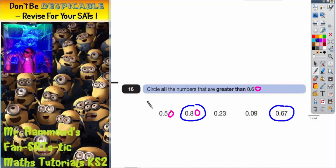You could actually think of it in terms of money. 0.60 would be the same as 60 pence. So this would be 50 pence, 80 pence. 80 pence is greater.